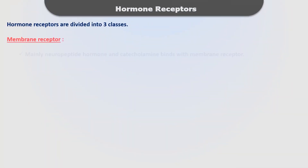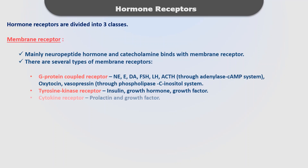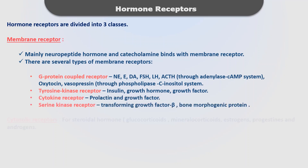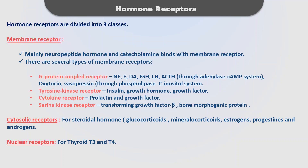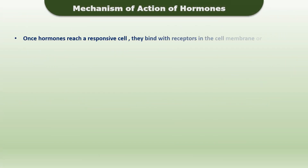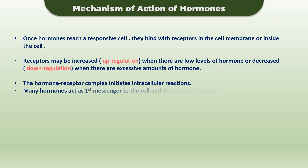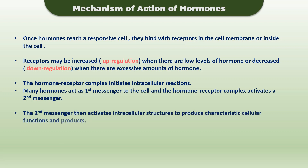Hormone receptors are of three classes: membrane receptors, cytosolic receptors, and nuclear receptors. Membrane receptors are further classified into G-protein coupled receptors, tyrosine kinase receptors, cytokine receptors, and serine kinase receptors. Once a hormone reaches a responsive cell, it binds with the receptor in the cell membrane or inside the cell. Receptors may be up-regulated when there are low levels of hormone, or down-regulated when there are excessive amounts. Many hormones act as first messengers, and the hormone-receptor complex activates a secondary messenger, which then activates intracellular structures to produce characteristic cellular functions.